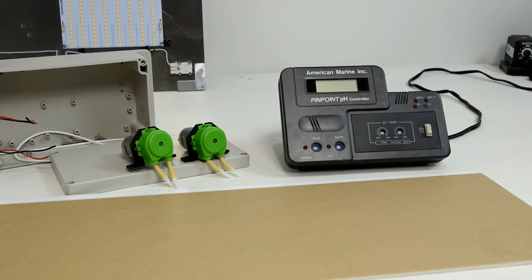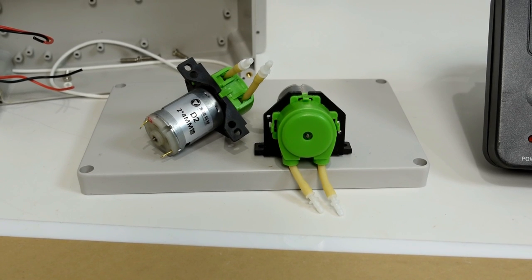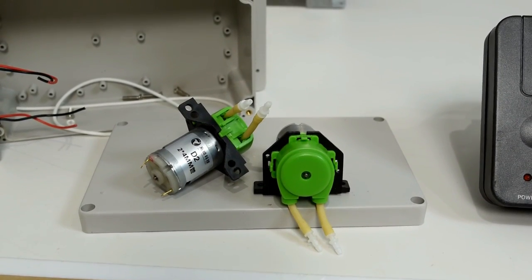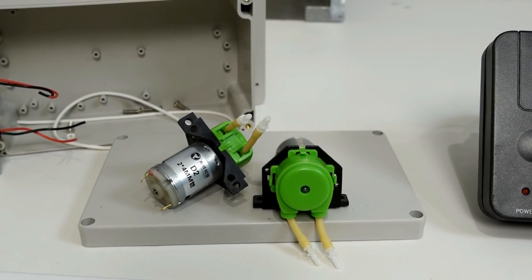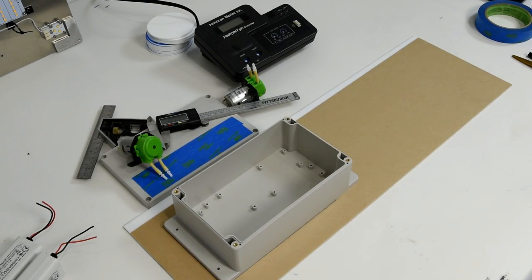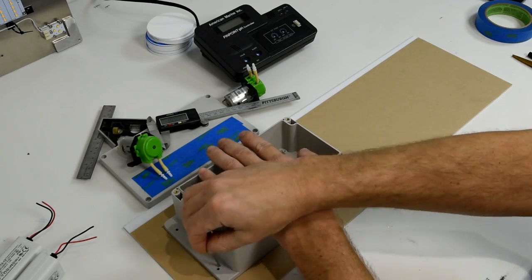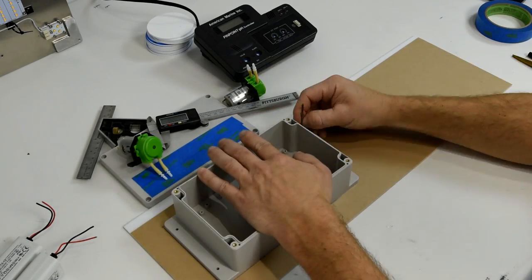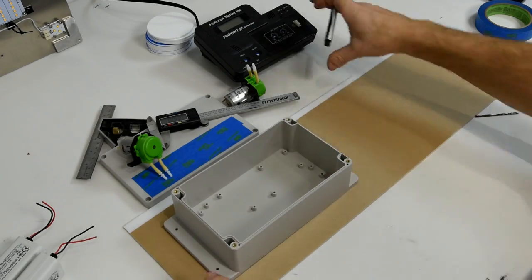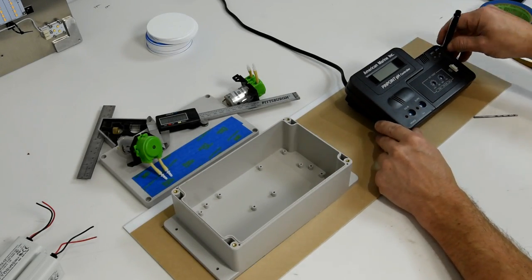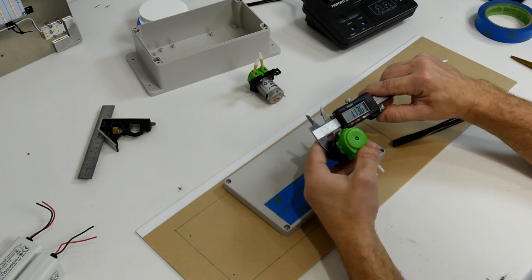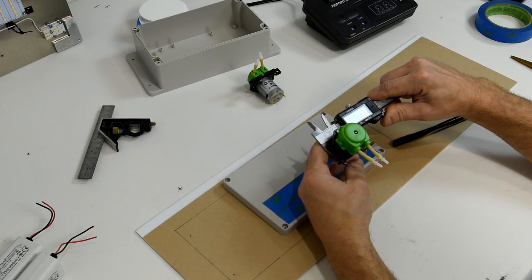The first step for the project is getting these peristaltic pumps mounted into this project box. The project box I'm using is eight inches wide by six inches by about two and a half inches deep. It has some little holes in the bottom for mounting components which I found to be pretty cool. I'm using a piece of plexiglass here to mount to.